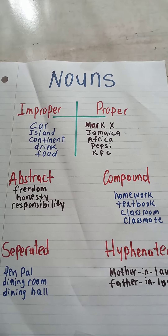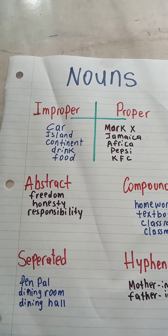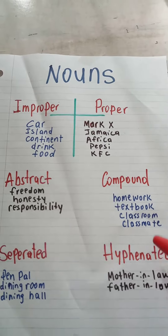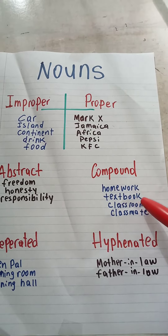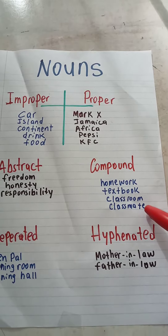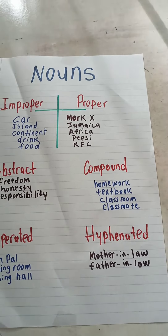Compound nouns would be homework, textbook, classroom, classmate — words that are joined together to form one word.